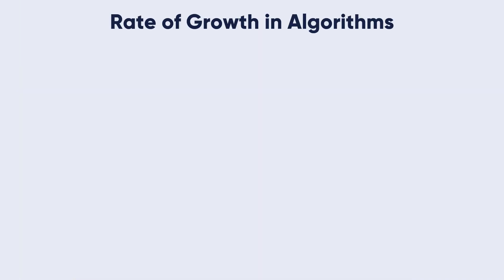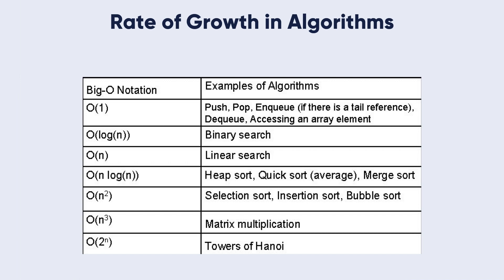So let's see the rate of growth in algorithms. In the same example of the car and the bicycle, we have the Big O notation that we are going to learn in the next video. I need you to understand that the highest power in the function would be considered the biggest rate of growth.